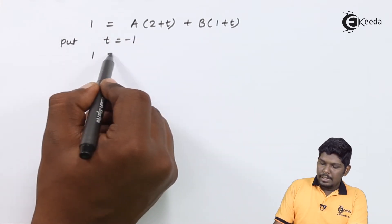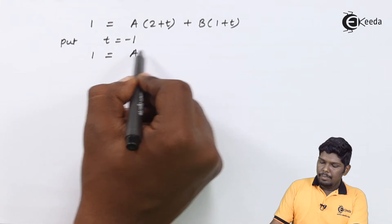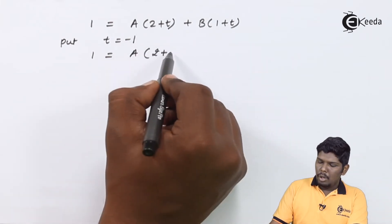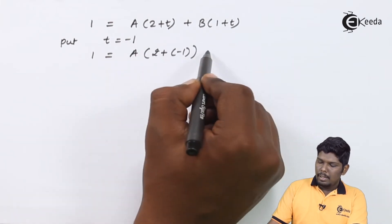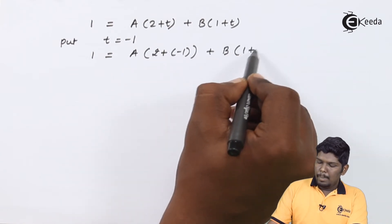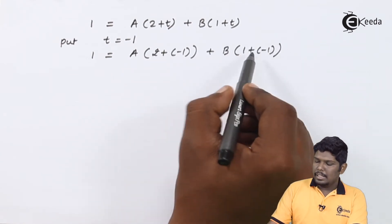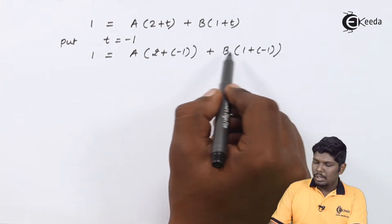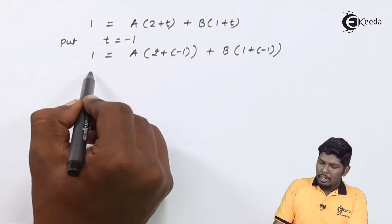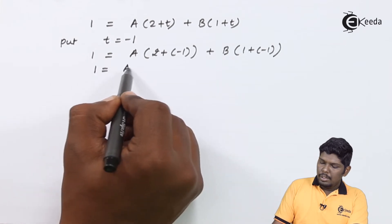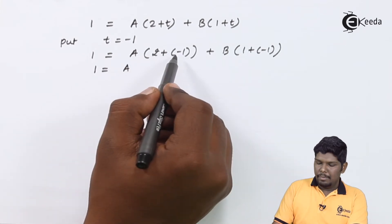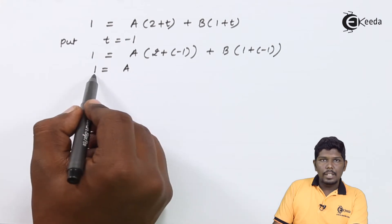Substituting t = -1: 1 = A(2 + (-1)) + B(1 + (-1)). Since 1 - 1 = 0, the entire B bracket becomes 0. This gives 1 = A(2 - 1) = A(1), therefore the value of A is 1.